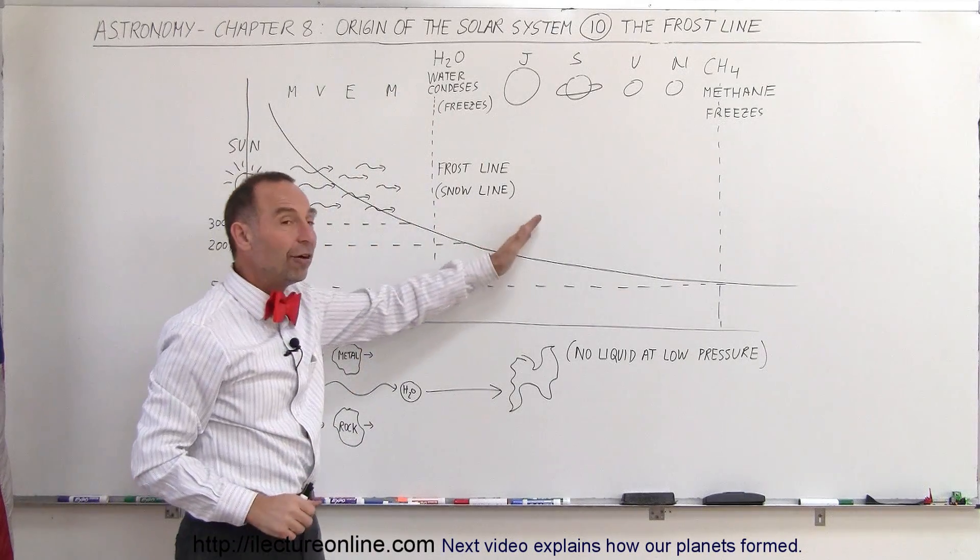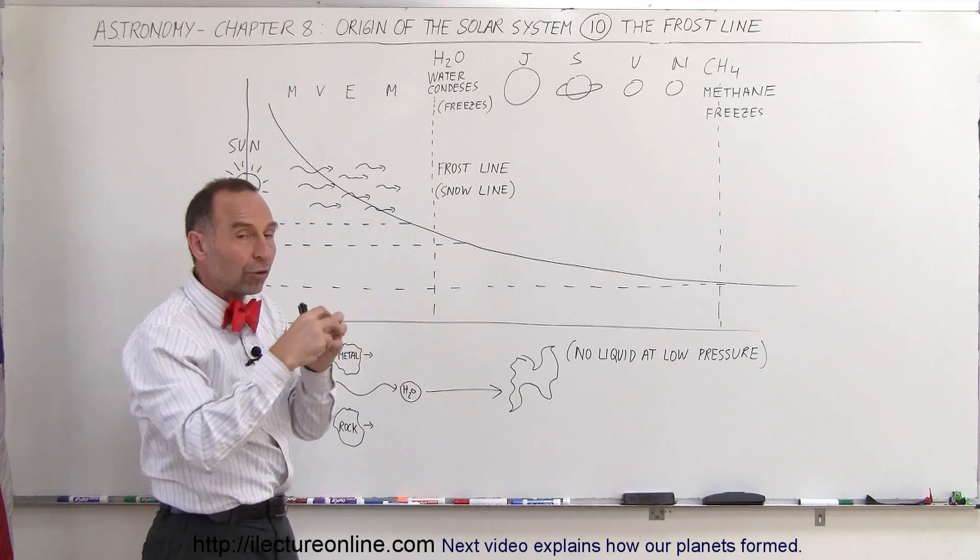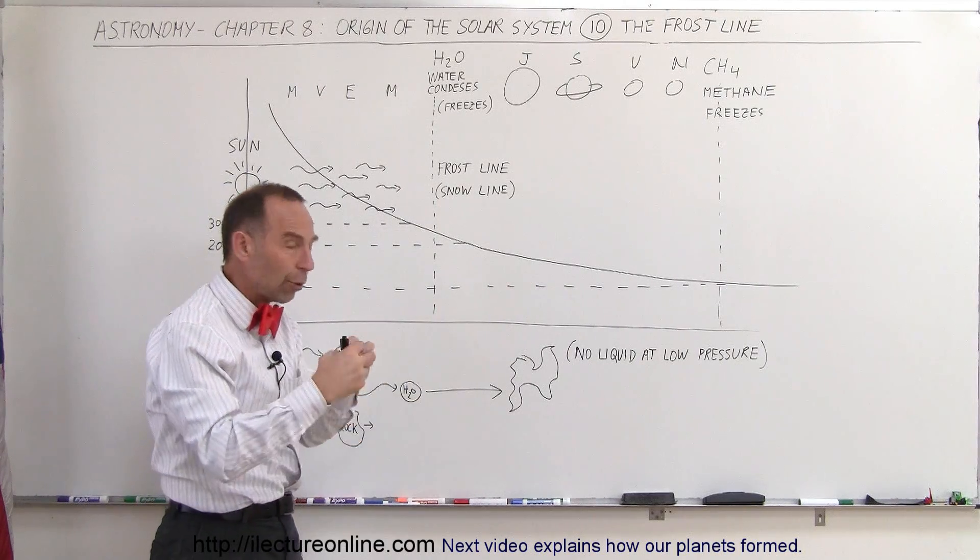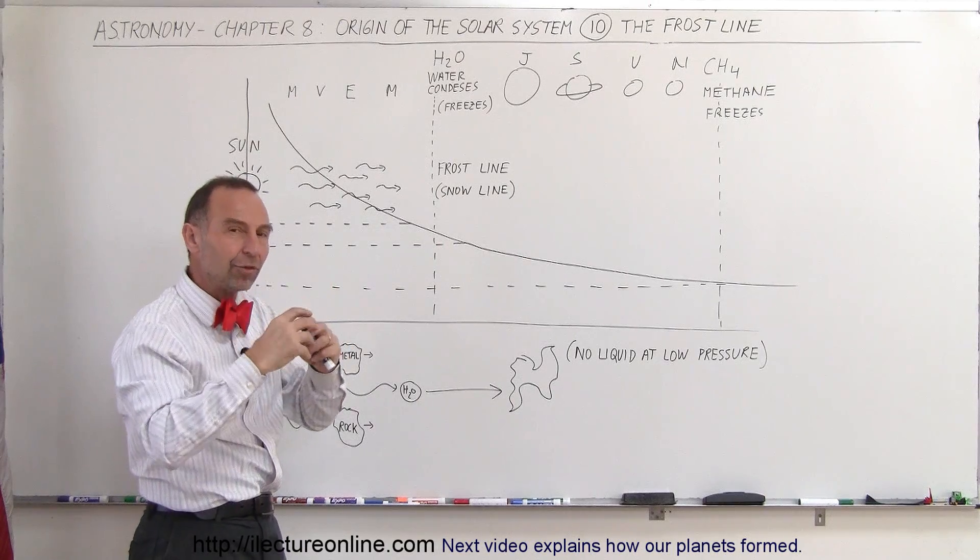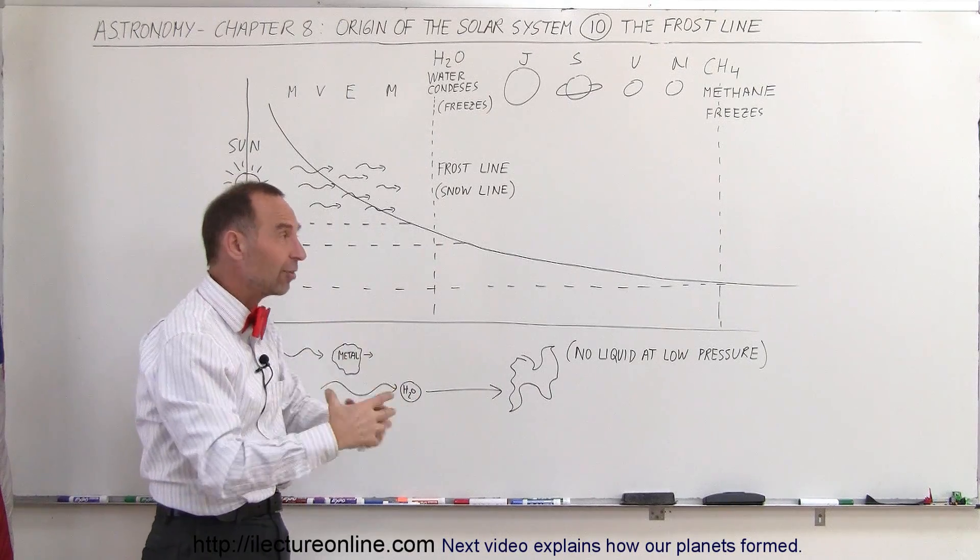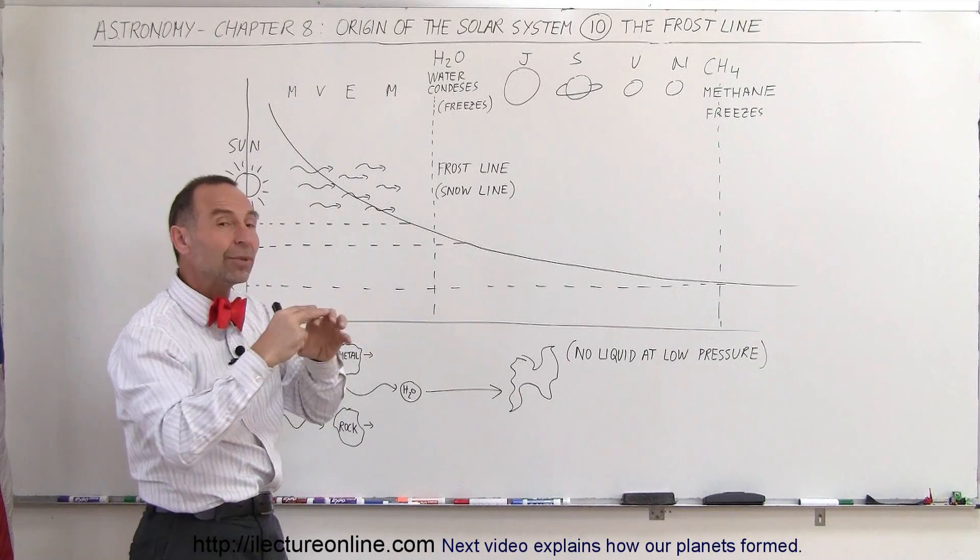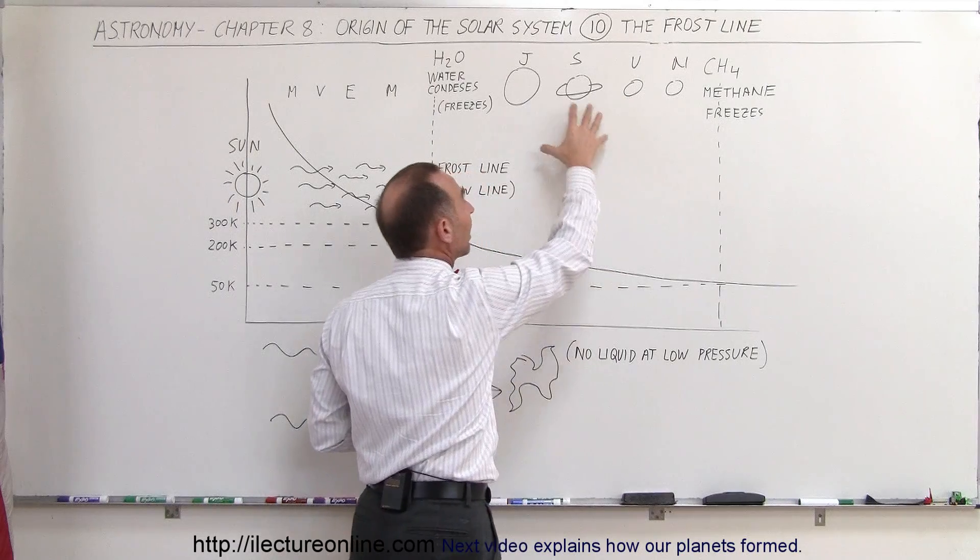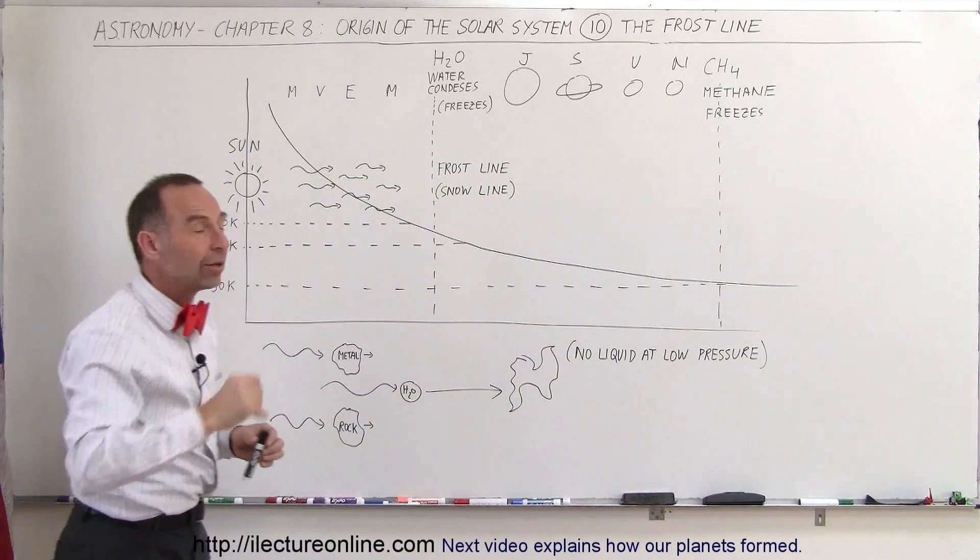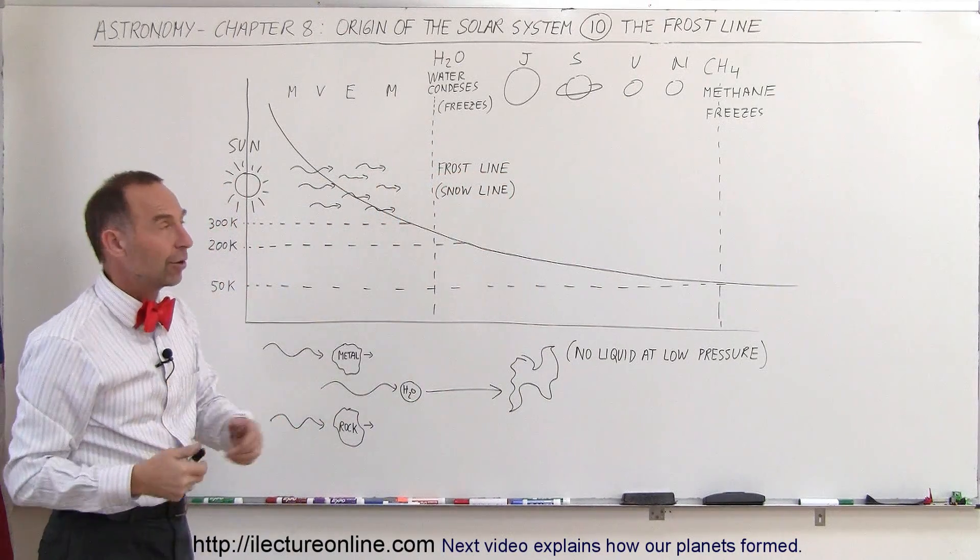Once it gets far enough, gravitational attraction would slowly bring those materials together. Those small grains would grow bigger and bigger through attraction - they form pebble size, fist size, house-size chunks - and then they would come together and eventually form the gas planets. Remember, these gas planets are predominantly made out of gas and very little metal and very little rock in comparison.